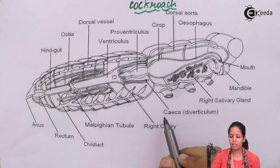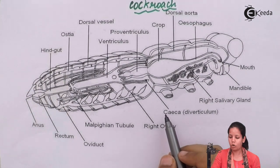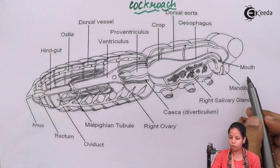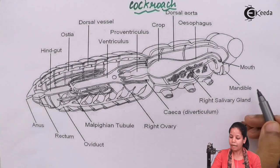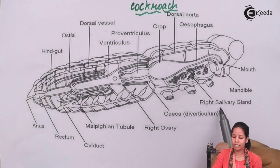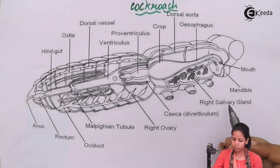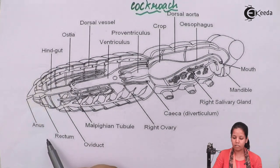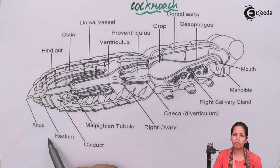When you dissect the cockroach, you observe the mouth region; just beneath that is the mandible. The mandible is associated with the salivary glands, which are linked to the digestive system. The Malpighian tubules, oviduct, rectum, and anus present further along the body are associated with the excretory system of the cockroach.